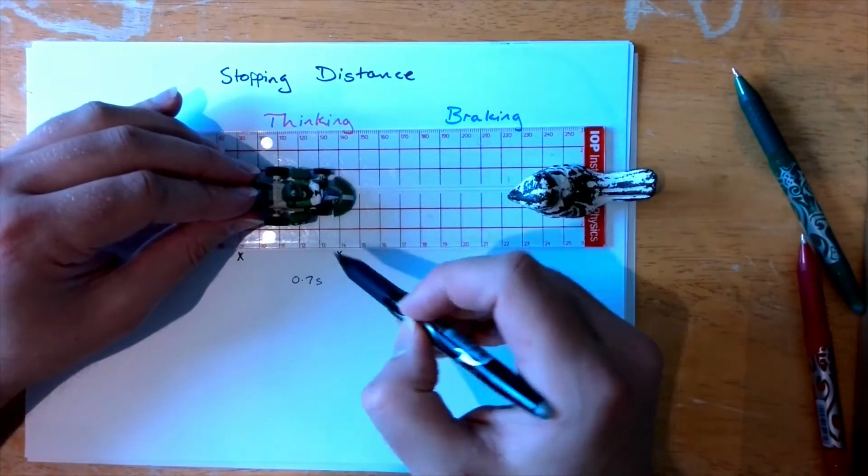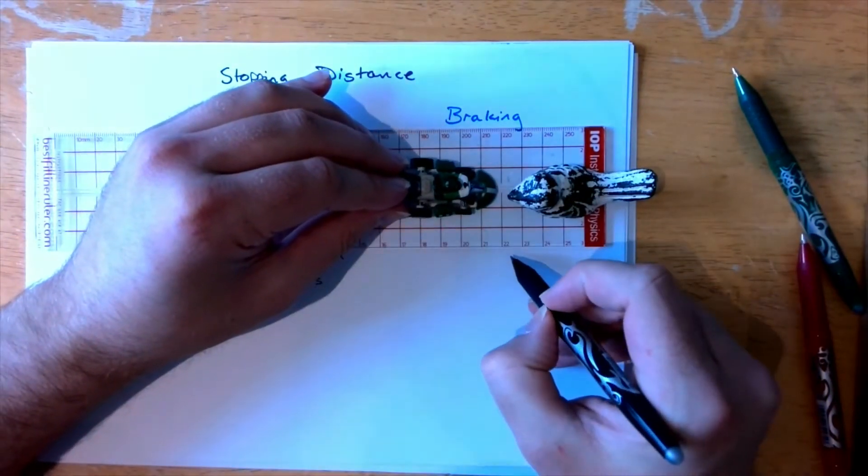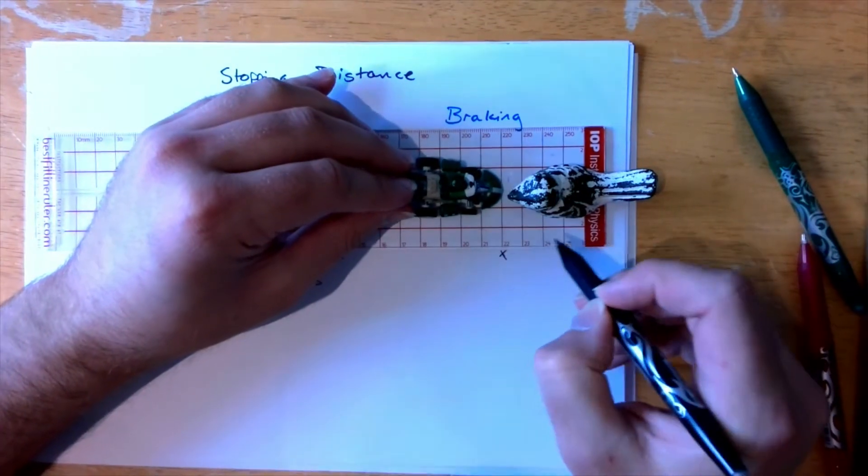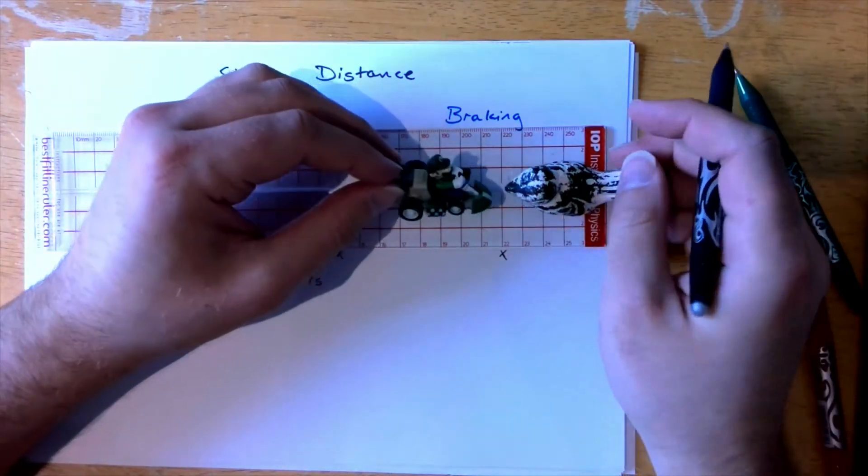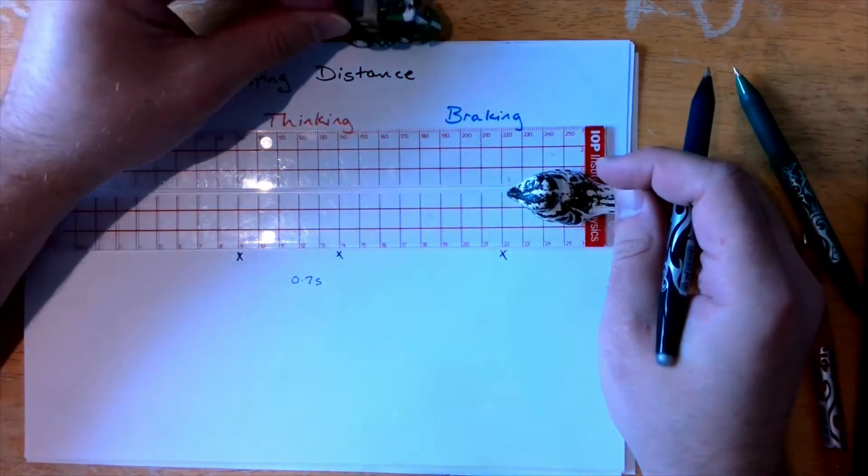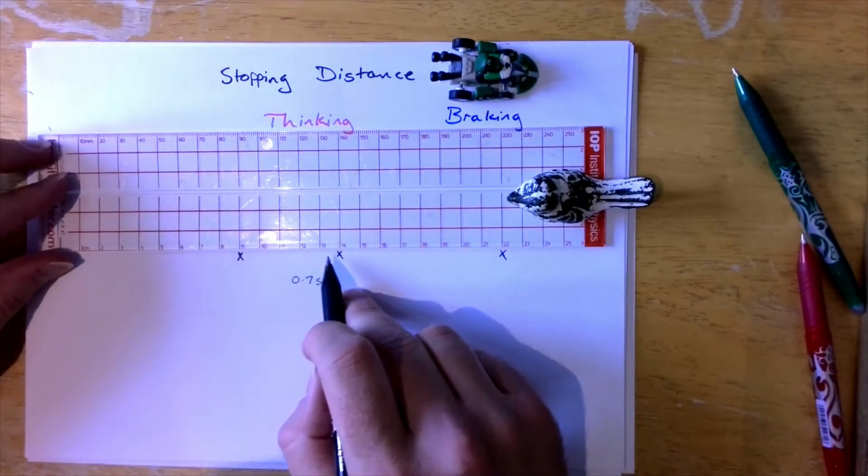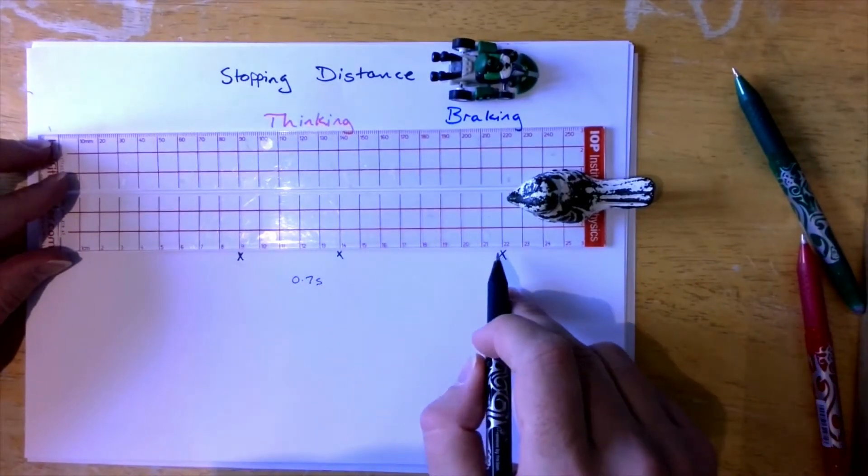So we thought about it. We started the brake pads going and tires screeching. We finish up at this point well before our hazard which is apparently a 30 foot tall magpie. So the total distance it took to stop the car will be equal to this distance here, the thinking distance, plus the braking distance.